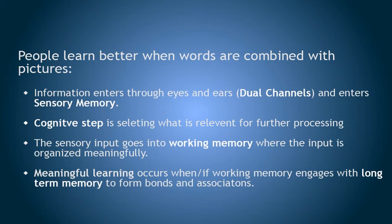Information enters through the eyes and the ears — dual channels — and this is into sensory memory. The cognitive step is selecting what is relevant for further processing. That sensory input then goes into working memory, where the input is organized meaningfully. Meaningful learning occurs when working memory then engages with long-term memory to form bonds and associations.